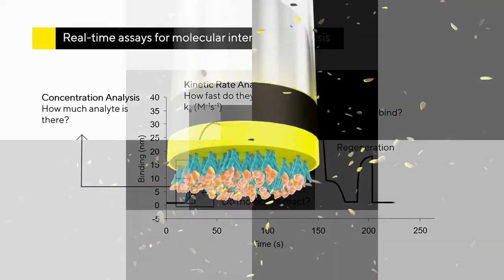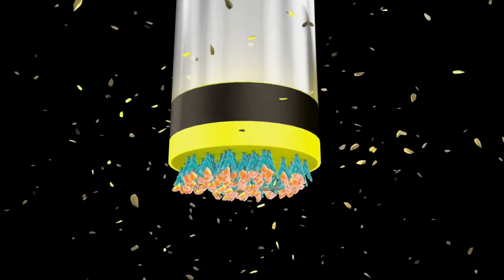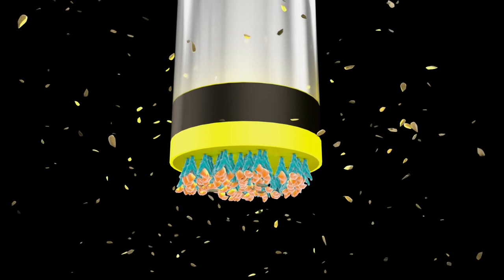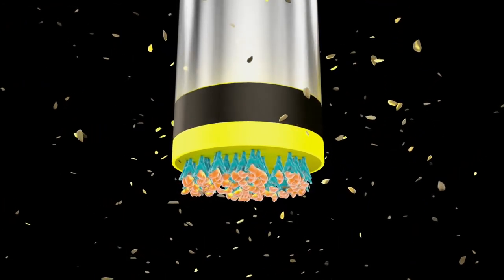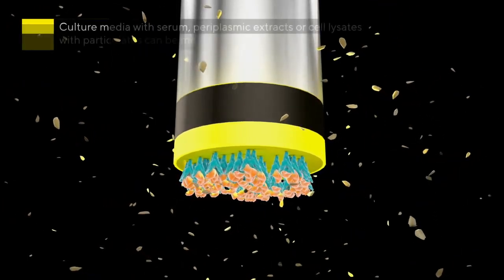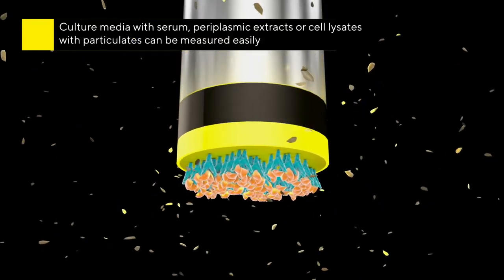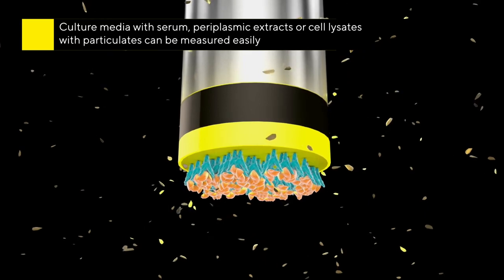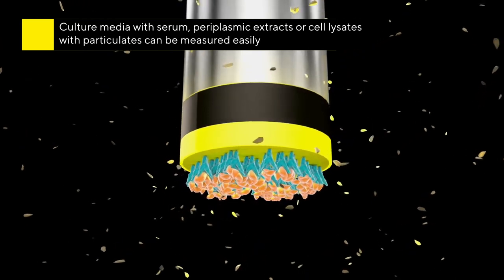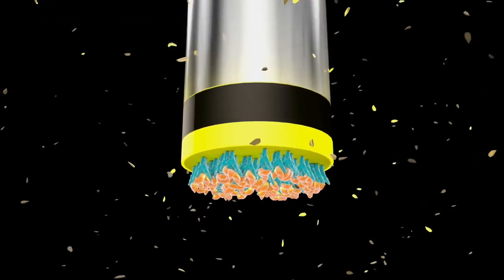A unique characteristic of BLI is that only analyte binding or dissociation can shift the interference pattern and generate a response profile. Unbound molecules, changes in the refractive index or pH, or other matrix effects do not affect results, making this technology well suited to measurements in crude samples.